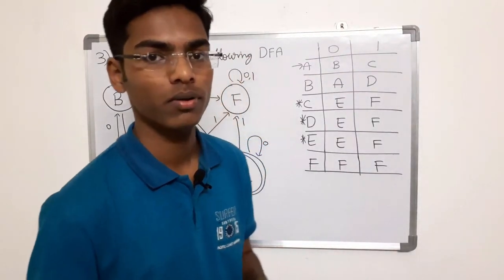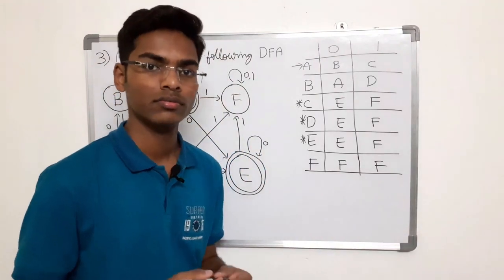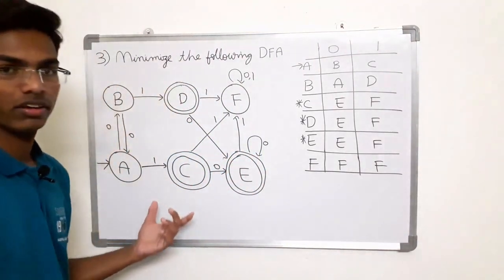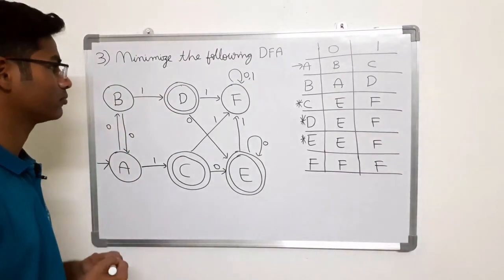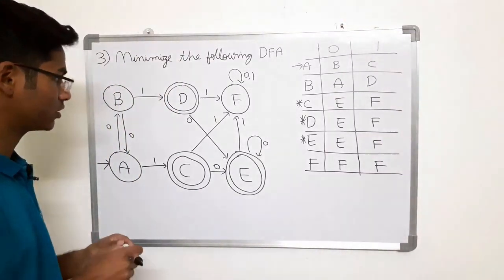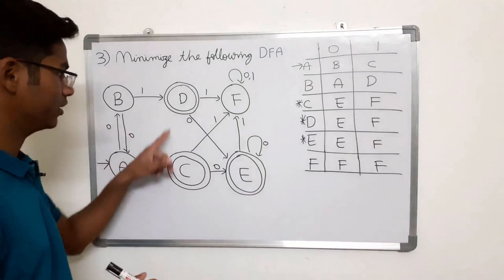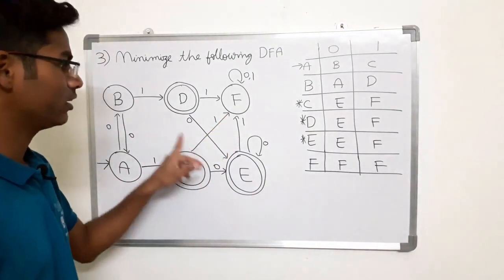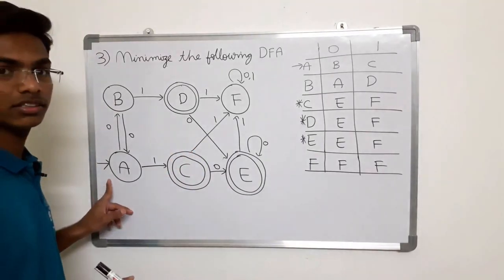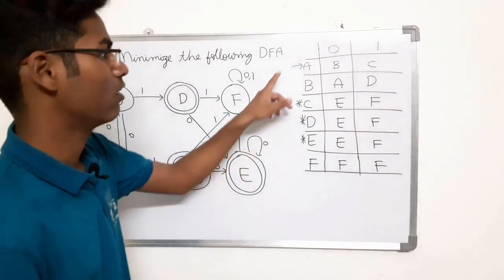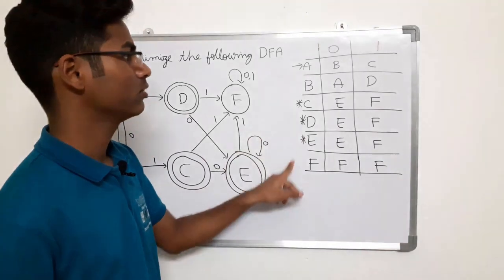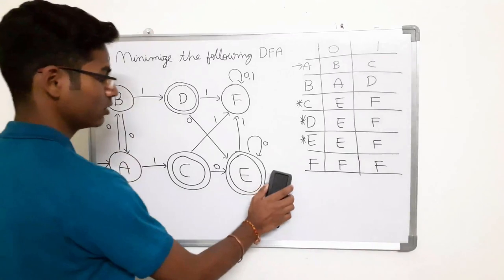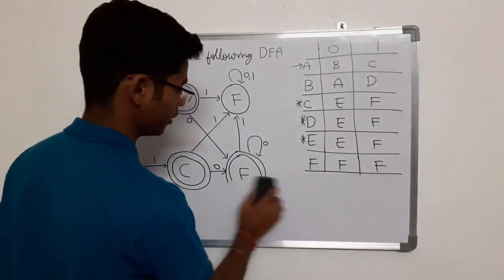Now let us solve another problem on Myhill-Nerode theorem which is different from the earlier two problems. The DFA given has six states A, B, C, D, E, and F, with three final states C, D, and E, and initial state A. I have already drawn the transition table. Now step one is drawing the table.